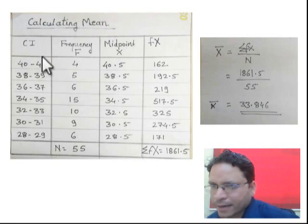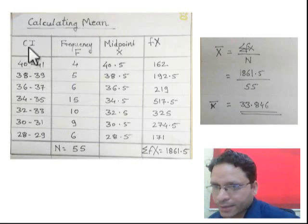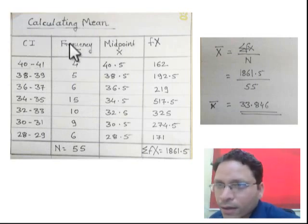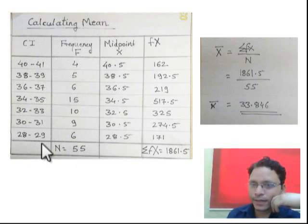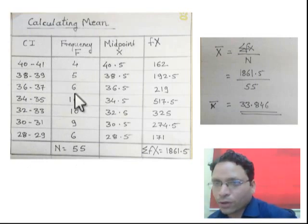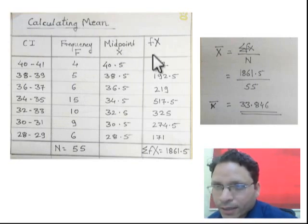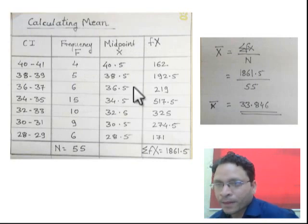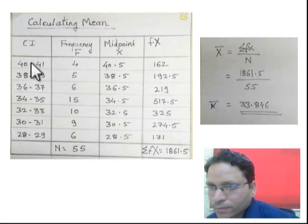When in exam you get this kind of question, you get only two columns: CI, which means class interval, and frequency f. These two columns only you get in exam. Then to calculate mean of such kind of given data, we have to make another two columns. One is x, or we can call it midpoint, and another is fx.